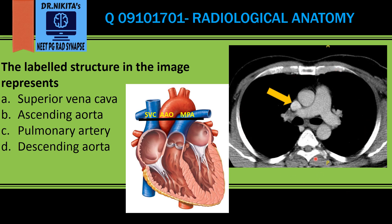First of all, this is a CT chest because the bones are white, and this is a contrast-enhanced CT because the vessels are white. If we take a section of the CT from right to left, we would see SVC, ascending aorta, and pulmonary artery — and that is exactly what the CT chest is showing.